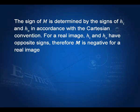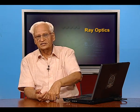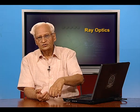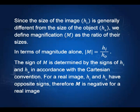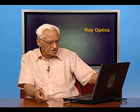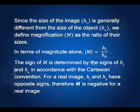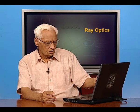The sign of m is determined by the signs of h_i and h_o. Remember the convention: all distances measured upwards are positive, all distances measured downwards are negative. So if h_i and h_o have different signs, then m will be negative. If they have the same sign — both negative or both positive — then magnification is positive. M is called the magnification of the device, whether a mirror or a lens.